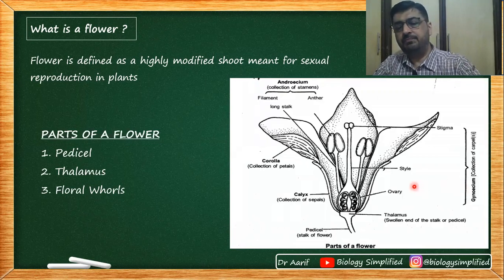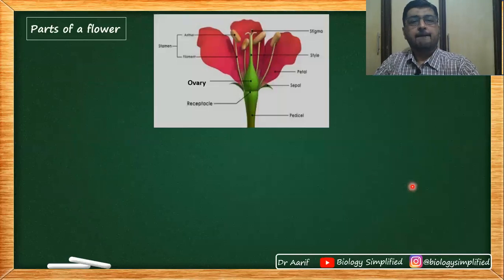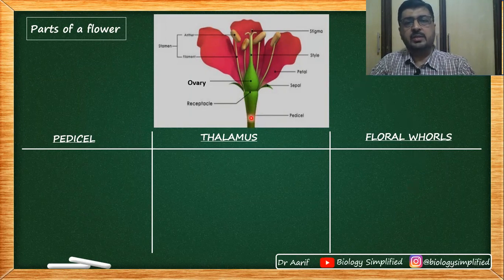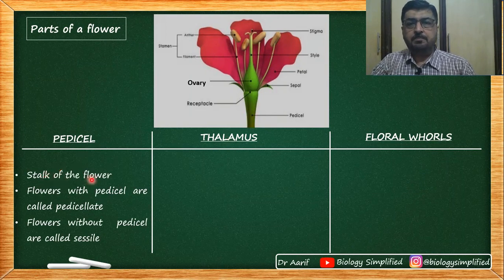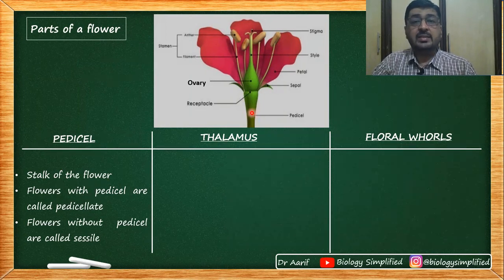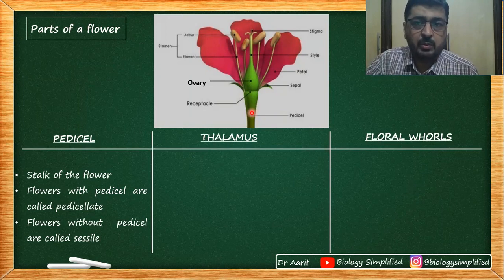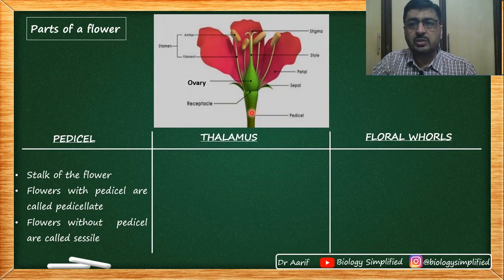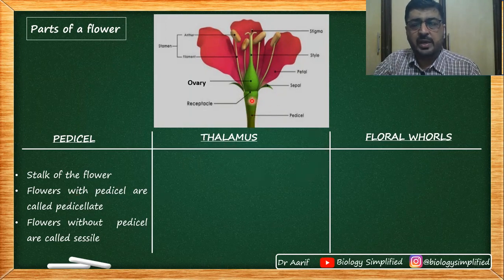So we've got pedicel, thalamus, and floral whorls. Pedicel is the stalk of the flower. Flowers with a pedicel are called pedicellate, and those without pedicel are called sessile. 'Sessile' is a general term — structures without a stalk are known as sessile. That is about the pedicel.